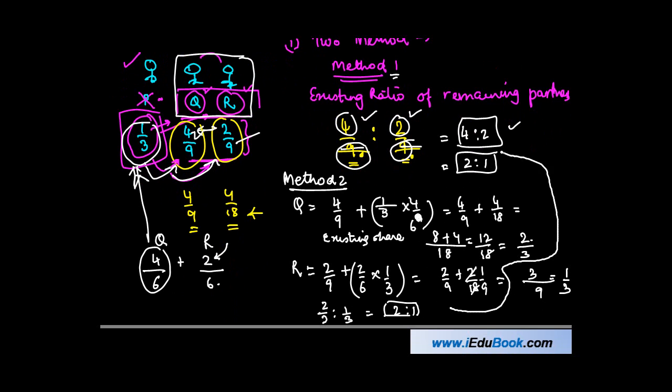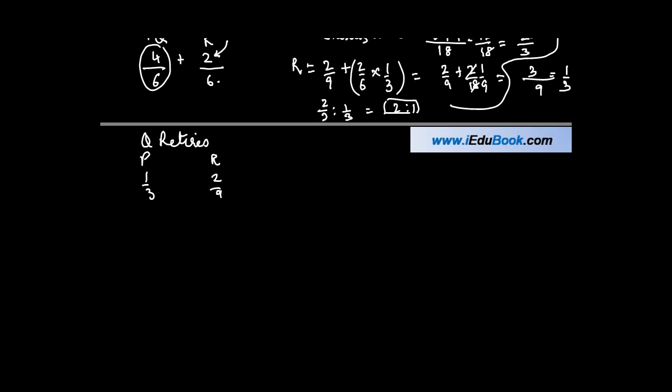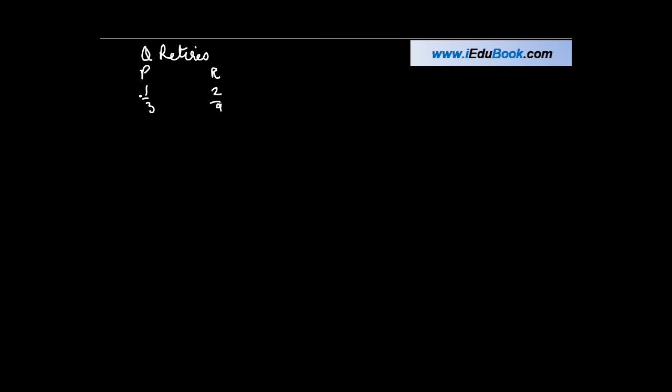Let's do the second case. If Q retires, then P is entitled to 1/3 and R is entitled to 2/9. In this case, I'll do it by method one. What is the ratio between these two: 1/3 to 2/9? The denominator is not common, so I write 1/3 as 3/9. I have to multiply both numerator and denominator by three. So it's 3/9 : 2/9, or the ratio is 3:2. If Q retires, the ratio between P and R is going to be 3:2.